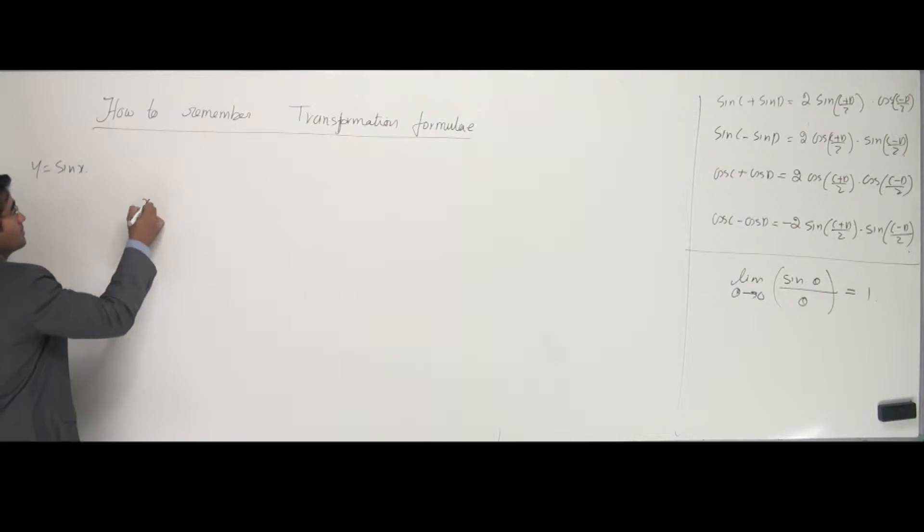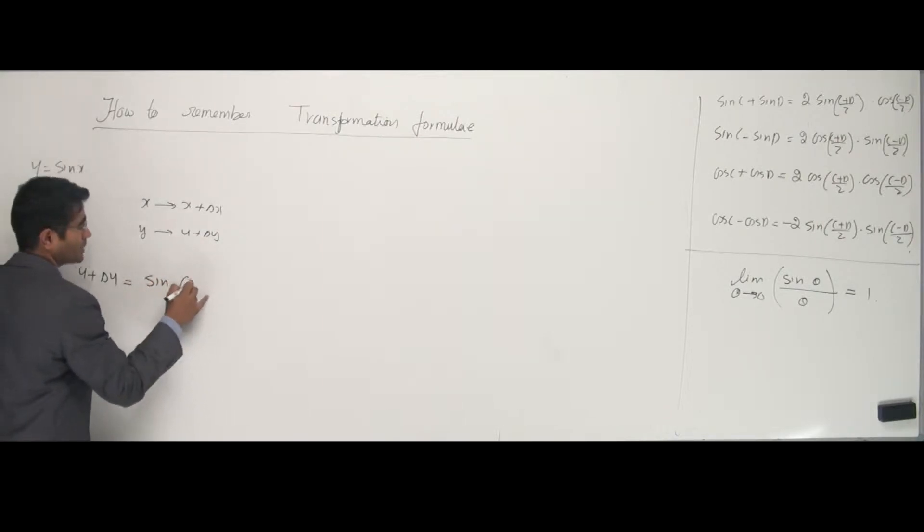The first stage is like x is incremented to x plus delta x and y would become y plus delta y. So, same things happen here. Can I substitute that? y plus delta y is equal to sine of x plus delta x, alright?